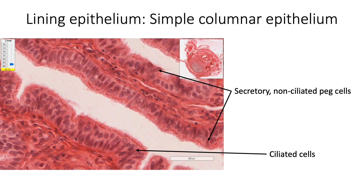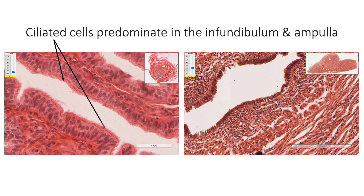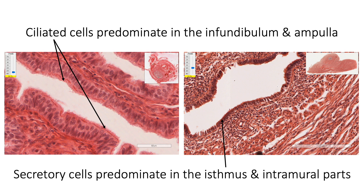The height of the ciliated cells and the number of cilia increase in the first half of the menstrual cycle and decrease in the second half. Secretions from the peg cells help in nourishing the gametes and also help in capacitation of the spermatozoa. Ciliated cells predominate in the infundibulum and ampulla region, whereas secretory cells predominate in the isthmus and intramural parts.